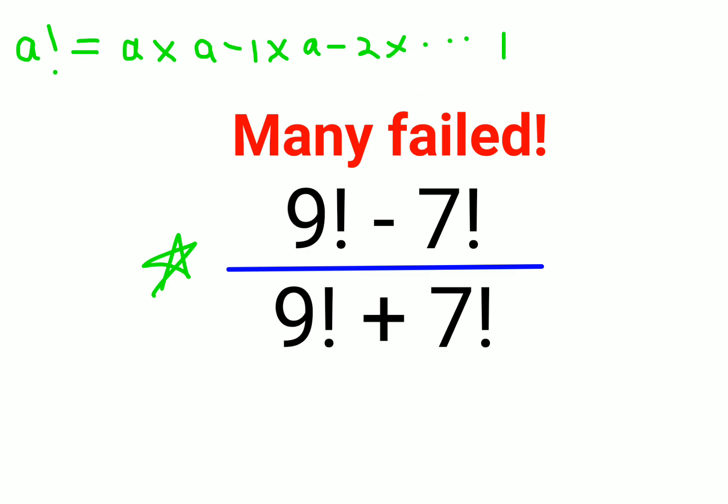For example, if you wanted to take 3 factorial, 3 factorial will be 3 times 2 times 1. And if I wanted 4 factorial, that would be 4 times 3 times 2 times 1. Now if you look closely, I can write 4 times this entire thing. So instead of 3 times 2 times 1, I can concisely write this as 3 factorial.